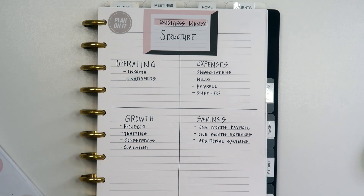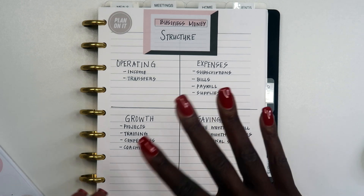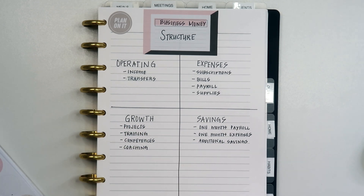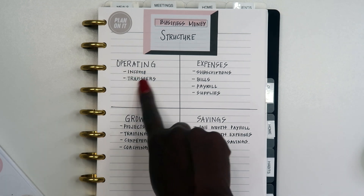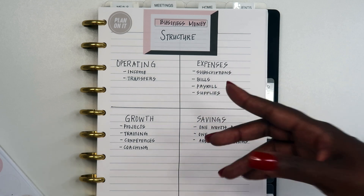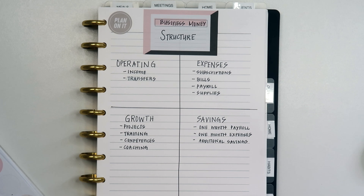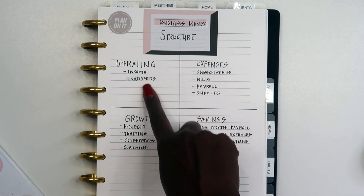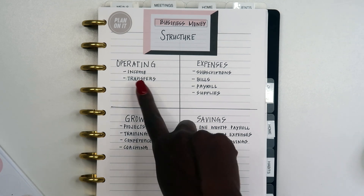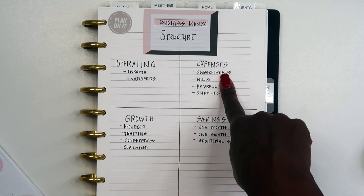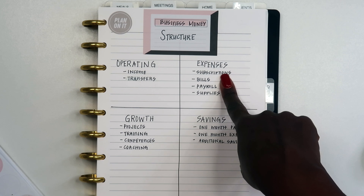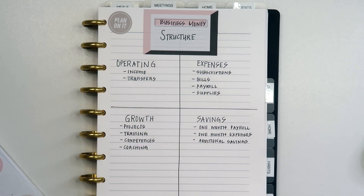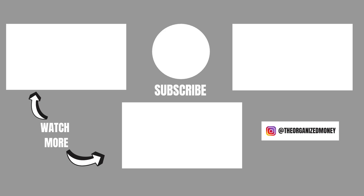These are the four accounts I keep within my business that help me with my money structure. I have four personal accounts and four business accounts, and these are the four business accounts that help me stay on top of it all. Every time I pay myself I transfer from operating to expenses, and once I run payroll it goes directly into my personal bill account. I transfer 10% to savings, 10% to growth, around 40% for business expenses, and leave the remainder sitting in my operating account, available for any of the other accounts as needed.